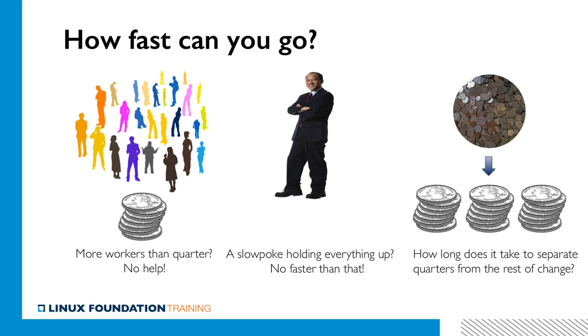A slightly less obvious limit has to do with the fact that even if you have more coins than friends, the total amount of time you spend on your task will be limited by how long it takes for your slowest friend to process his or her pile. So again, there's a problem.